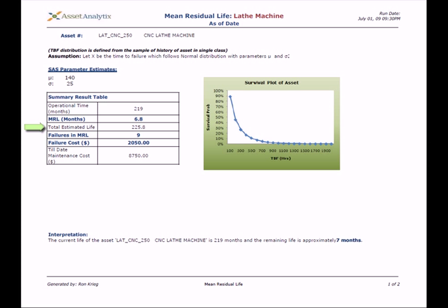The entire life of the asset CNC Lathe machine is calculated from survived life and the mean residual life of the asset.